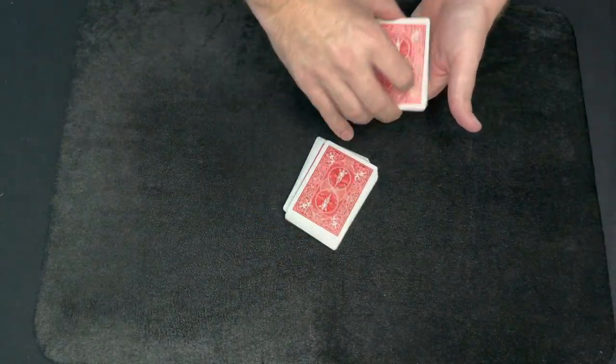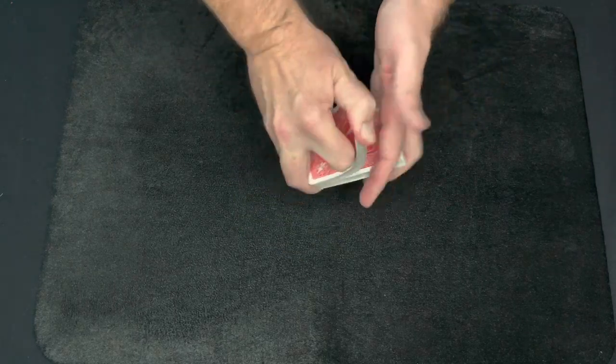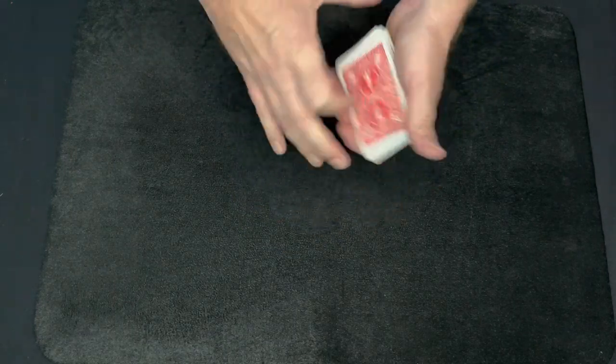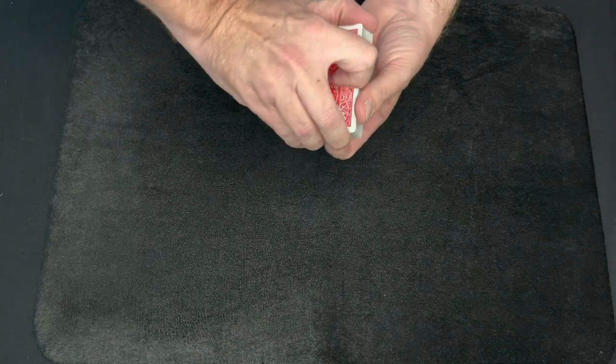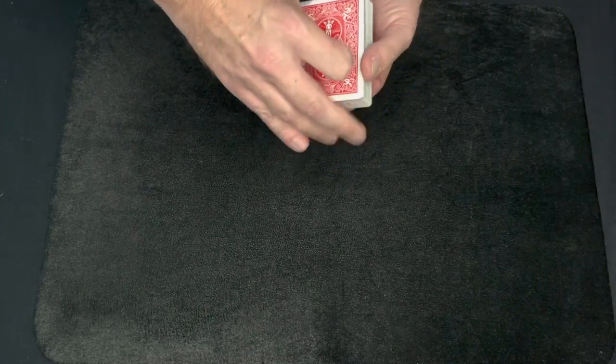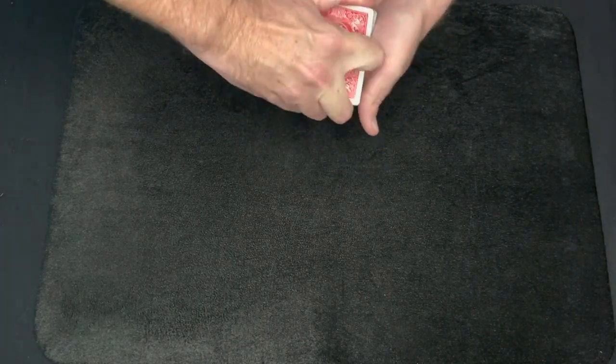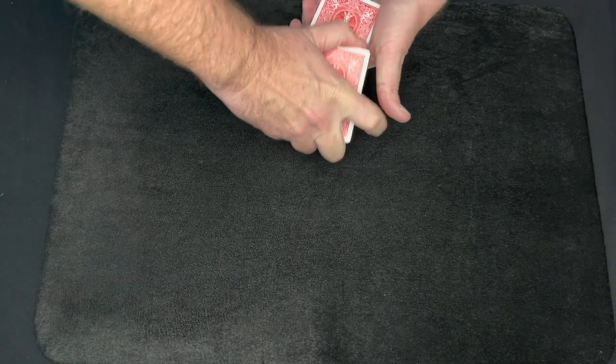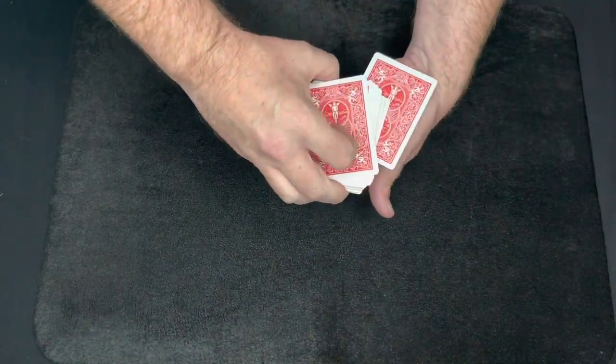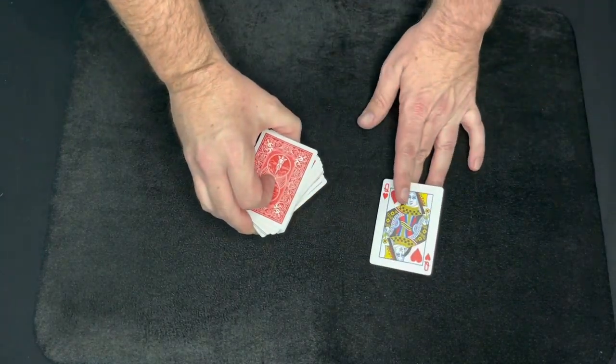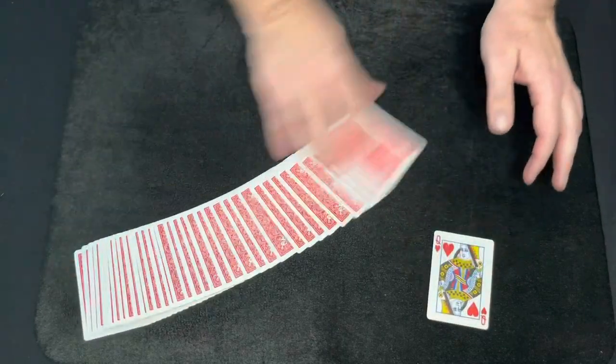You have no idea where it is, give the deck a few cuts and then a shuffle, and now just by feeling, just like that, you can find their card. And I think I got it right about here. Boom! What was your card? Was it the queen of hearts? And that's flying card pivot.